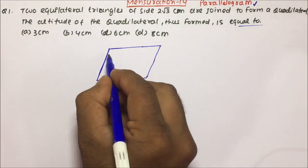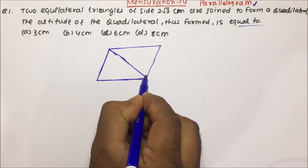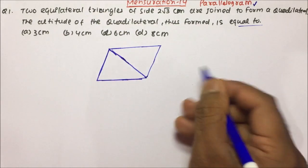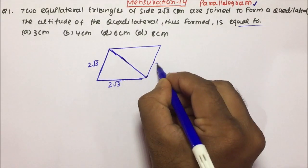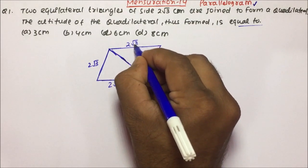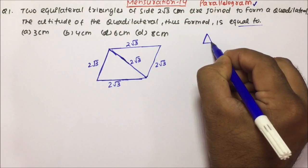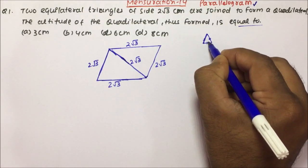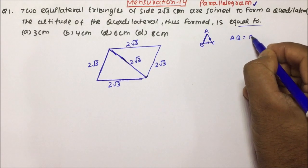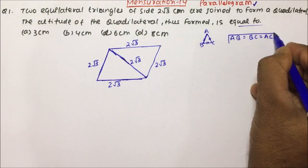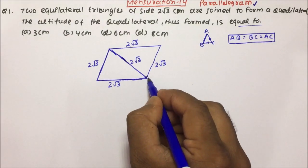Two equilateral triangles are joined to form a quadrilateral. Each side is 2√3 centimeters — this is 2√3, this is also 2√3, and this is also 2√3, and this will also be 2√3. Equilateral triangle means all three sides are equal. So for triangle ABC: AB equals BC, BC equals AC — all three sides are equal in an equilateral triangle.